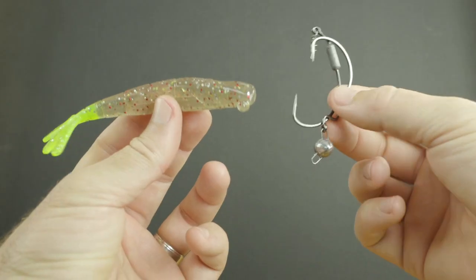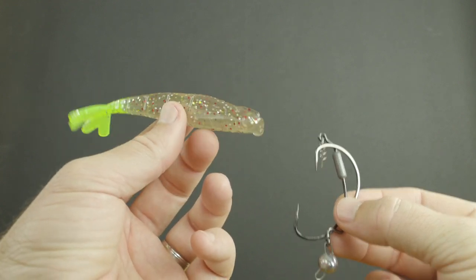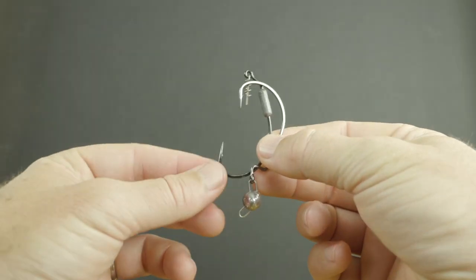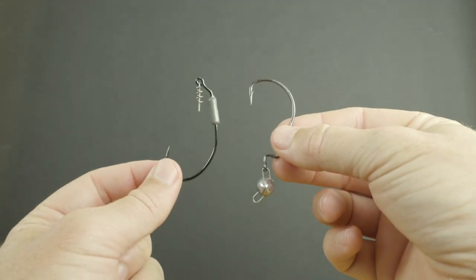As far as rigging, yes these do rig with pretty much any type of weighted hook or jig head. These are the two that work best - these were actually designed for these PowerPrawn USA lures.